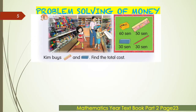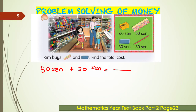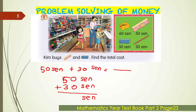Okay class, we go to problem solving of money. Look at example one. Kim buys a ruler and an eraser — find the total cost. One ruler costs 50 cents and an eraser costs 30 cents each. So we have to write the number sentence first: 50 cents plus 30 cents. Because we want to find the total cost, write in standard written method — 50 cents above and 30 cents below. 0 plus 0 is 0, 5 plus 3 is 8, so the answer is 80 cents.